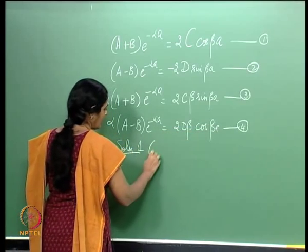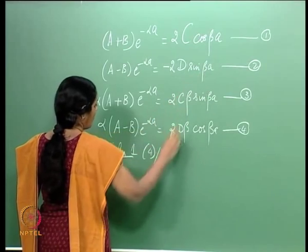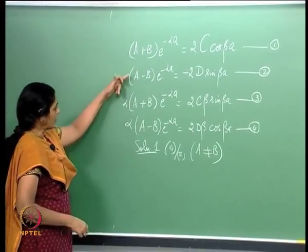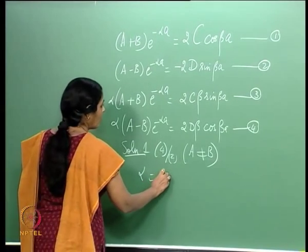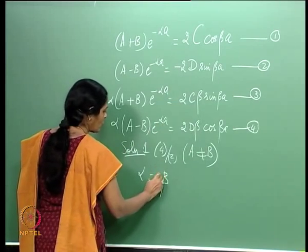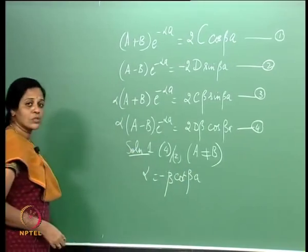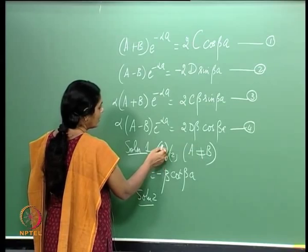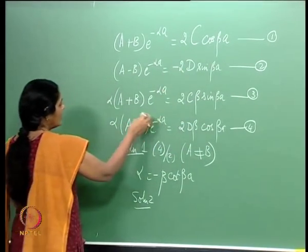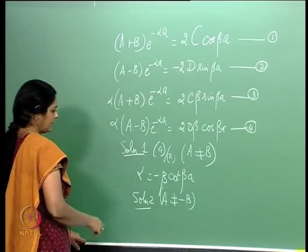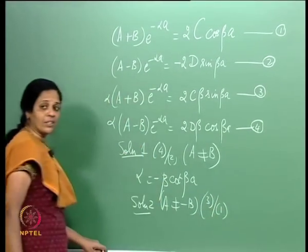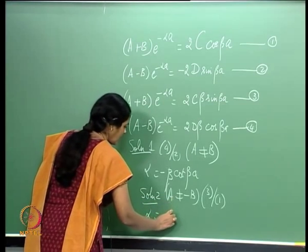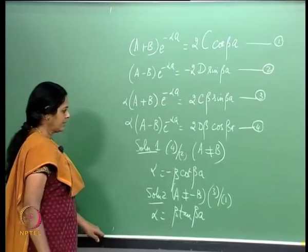We discussed 2 possible solutions. Solution 1 came by dividing equation 4 by equation 2, assuming A is not equal to B, giving alpha = -beta cot(beta a). Solution 2 came by dividing equation 3 by equation 1, assuming A is not equal to -B, giving alpha = beta tan(beta a). These are the two possible solutions.